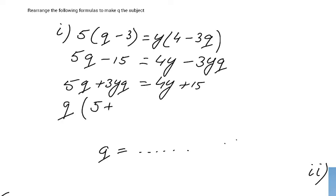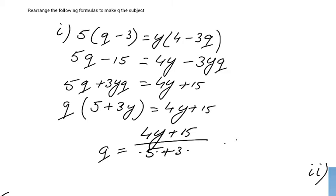Q times 5 plus 3Y equals 4Y plus 15. And then what I do, I divide both sides by 5 plus 3Y. And what do I get then? I get Q equals 4Y plus 15 over 5 plus 3Y.